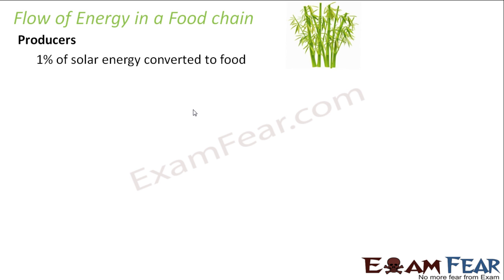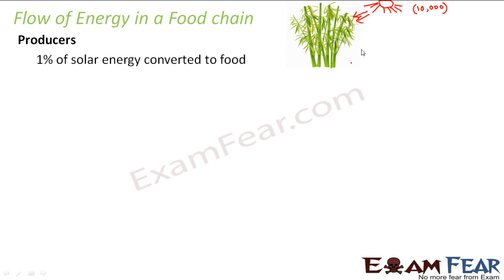Can you guess how much percentage of the solar energy is actually getting converted into food? It is just 1% of solar energy which actually gets converted into food during the process of photosynthesis. Just think how less it is. So to give you an estimation, let us suppose that 10,000 units of solar energy is coming in. Plants will perform photosynthesis and prepare food. So how much energy will this plant have? It will have just 1% of 10,000, which is 100 units.